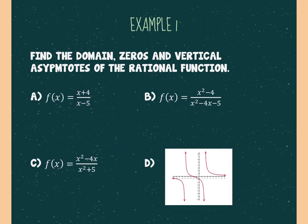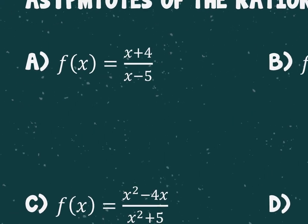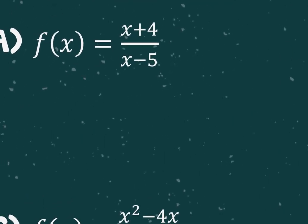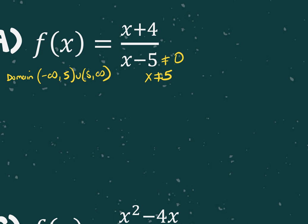It says find the domain, the zeros, and the vertical asymptotes of the rational function. We'll start with A. To find domain, the denominator does not equal zero — x would not equal five. So my domain is from negative infinity to five and five to positive infinity. My vertical asymptote is literally just the opposite of that: x equals five.